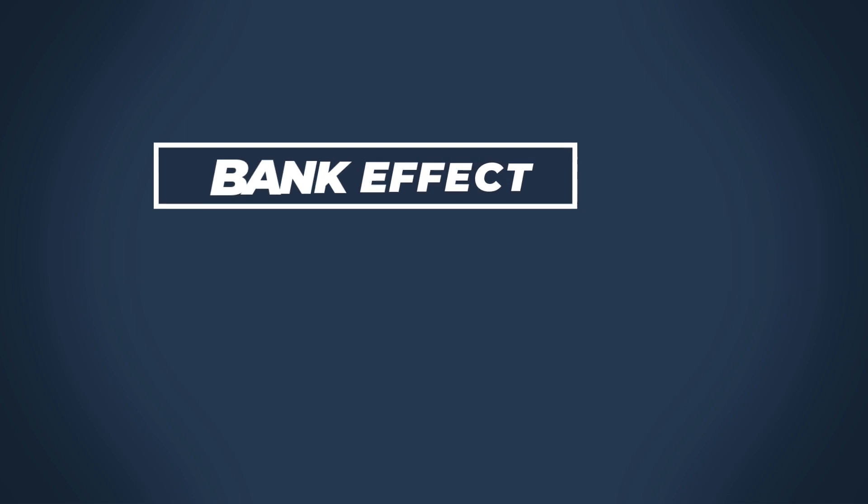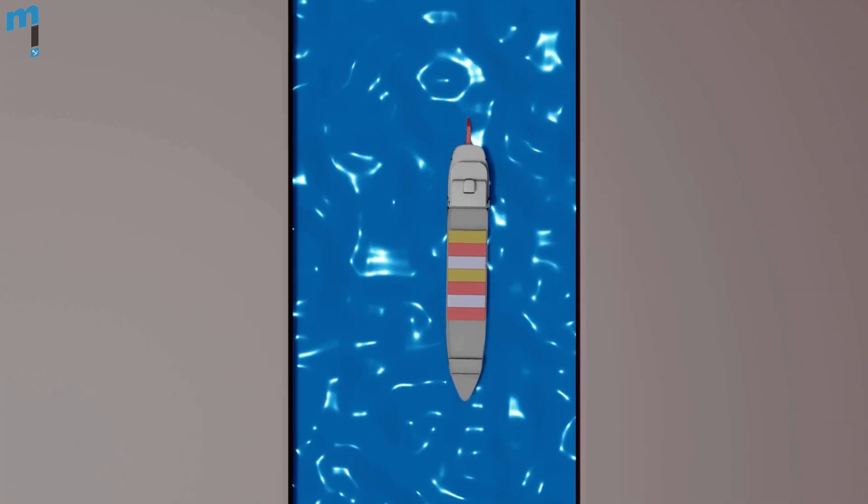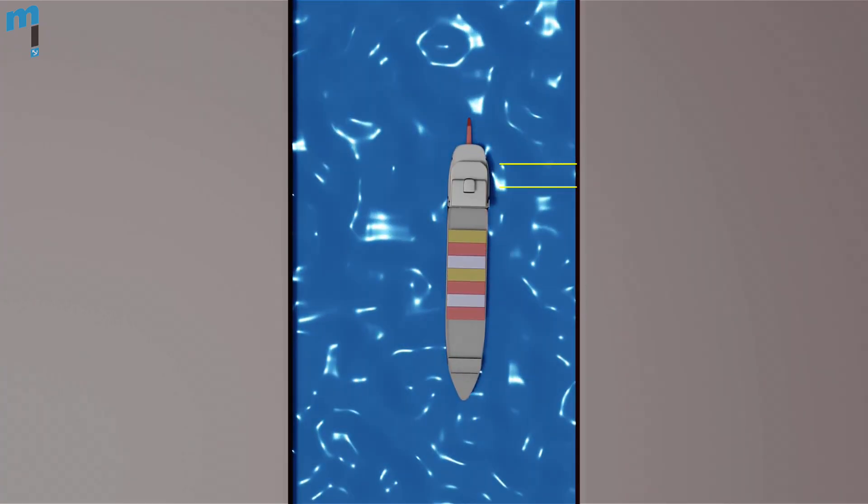Bank effect. Till now we have considered the keel's proximity to the river or channel bed. Now we will consider the hull's proximity to the bank. We see the ship is close to the stern on the port side while the starboard side is wide open.